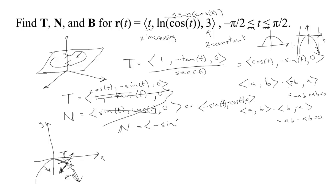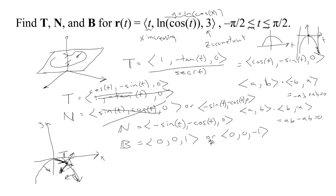The binormal is easy to determine geometrically since the curve lies in a plane of constant z. The binormal must point either straight up (0, 0, 1) or straight down (0, 0, negative 1). Using the right-hand rule — fingers along T curling toward N — the thumb points down, so B = (0, 0, negative 1). This geometric approach works here because one position component is constant, reducing the problem to a two-dimensional case.